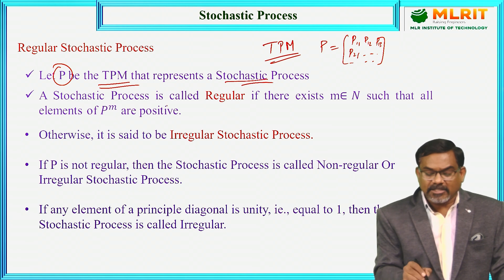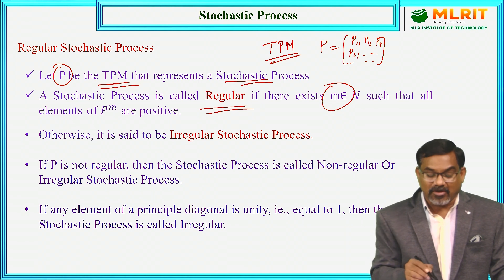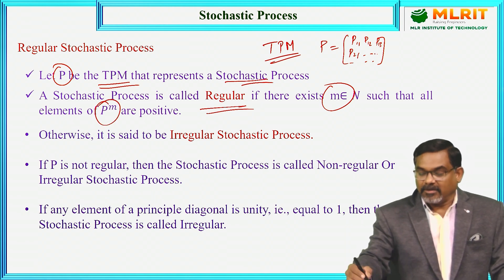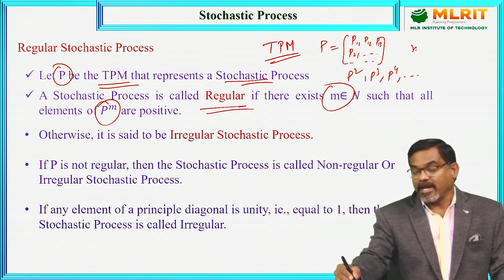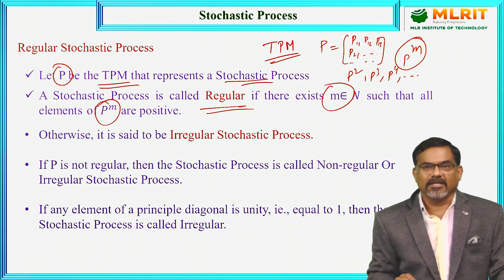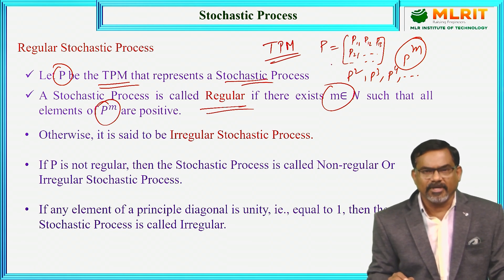A stochastic process is said to be regular if there exists M belonging to the natural numbers such that all the elements of the P power M matrix are positive. So, as we have the stochastic matrix P, if we calculate P squared, P cubed, P power 4, and so on, for some power M, all the elements of P power M must be positive. Then the stochastic process is said to be regular — the matrix is said to be regular, and hence the stochastic process is said to be regular.